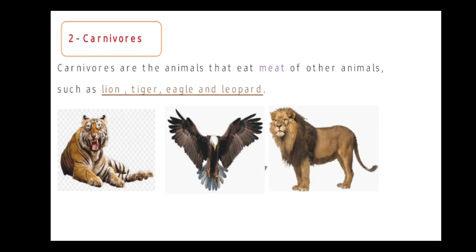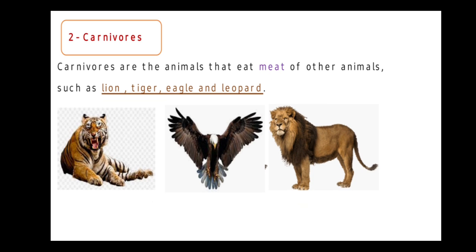Number 2. There are animals that eat meat — the meat of other animals. Like what, Junior 2? Like lion, tiger, eagle, and leopard. They are animals that eat the meat of other animals.